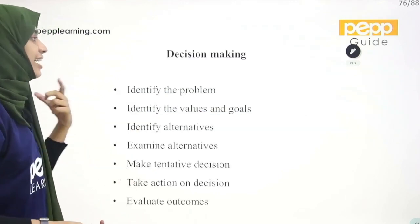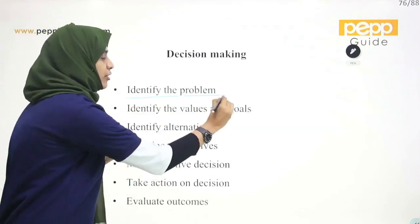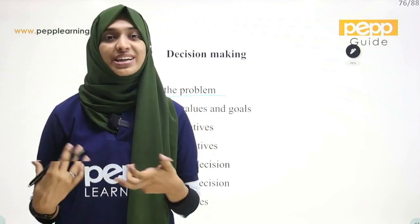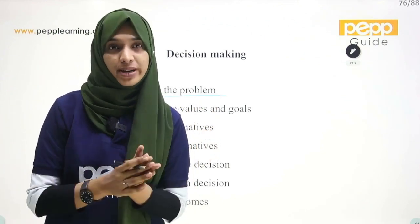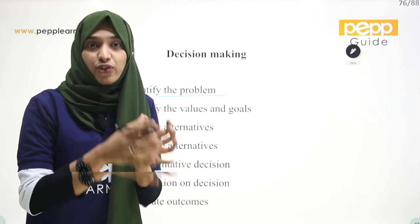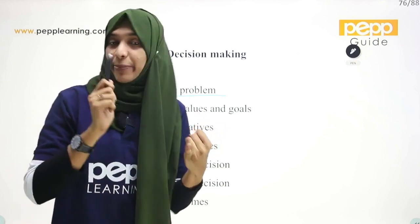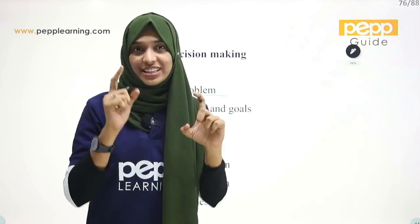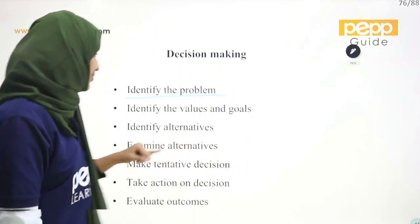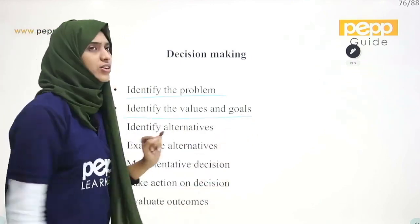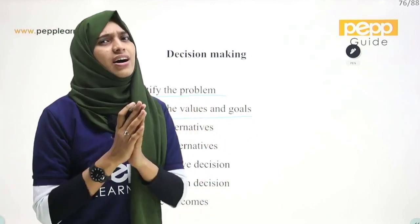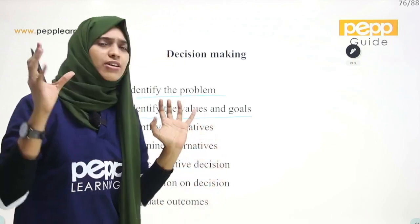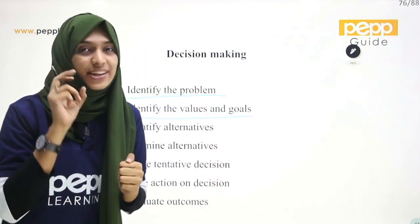We will have a choice. That is why we identify the problem. We have a phobia — there is a phobia about the exam. Why is that phobia? Because our parents are going to get sick, we are going to be judged in society. Then we identify the values and the goals.